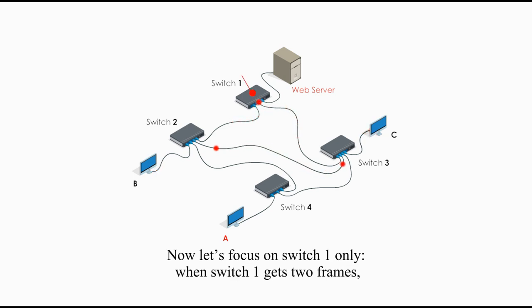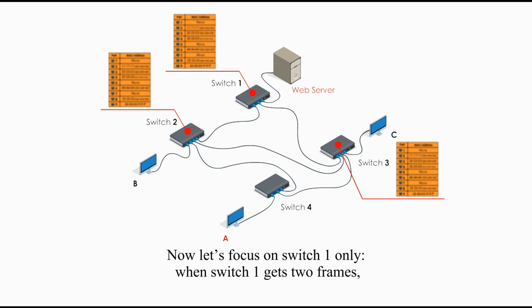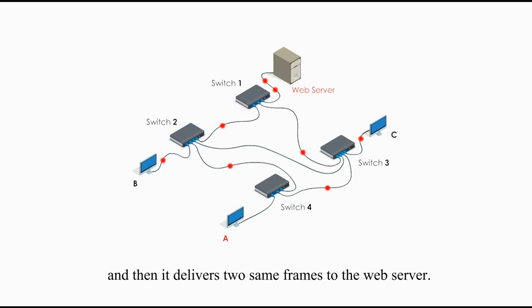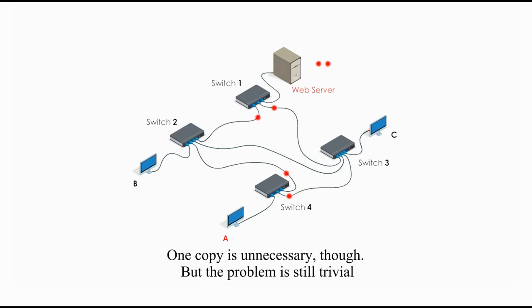Now, let's focus on switch 1 only. When switch 1 gets 2 frames, it checks its set table, and finds the web server is the destination. And then it delivers 2 same frames to the web server. One copy is unnecessary, though. But the problem is still trivial as more bigger problems are coming soon.